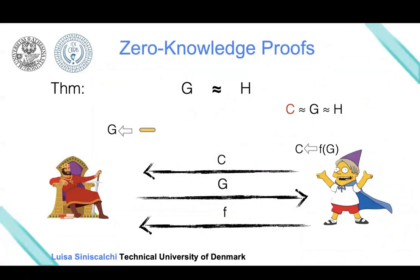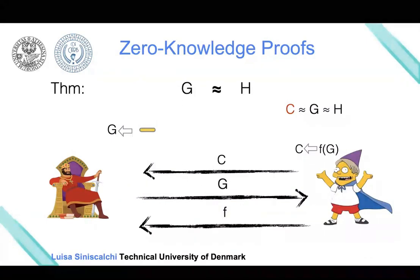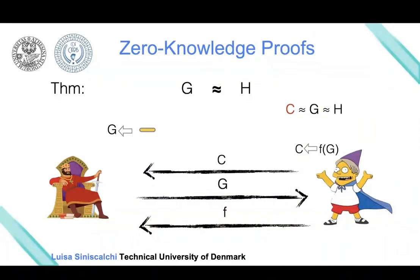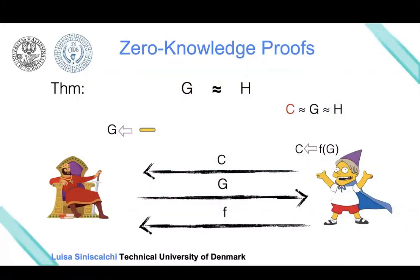If G and H are not isomorphic, then the malicious prover can succeed with probability at most one-half, because he can at most sample a graph C isomorphic to G or to H, but not to both, since G and H are not isomorphic.